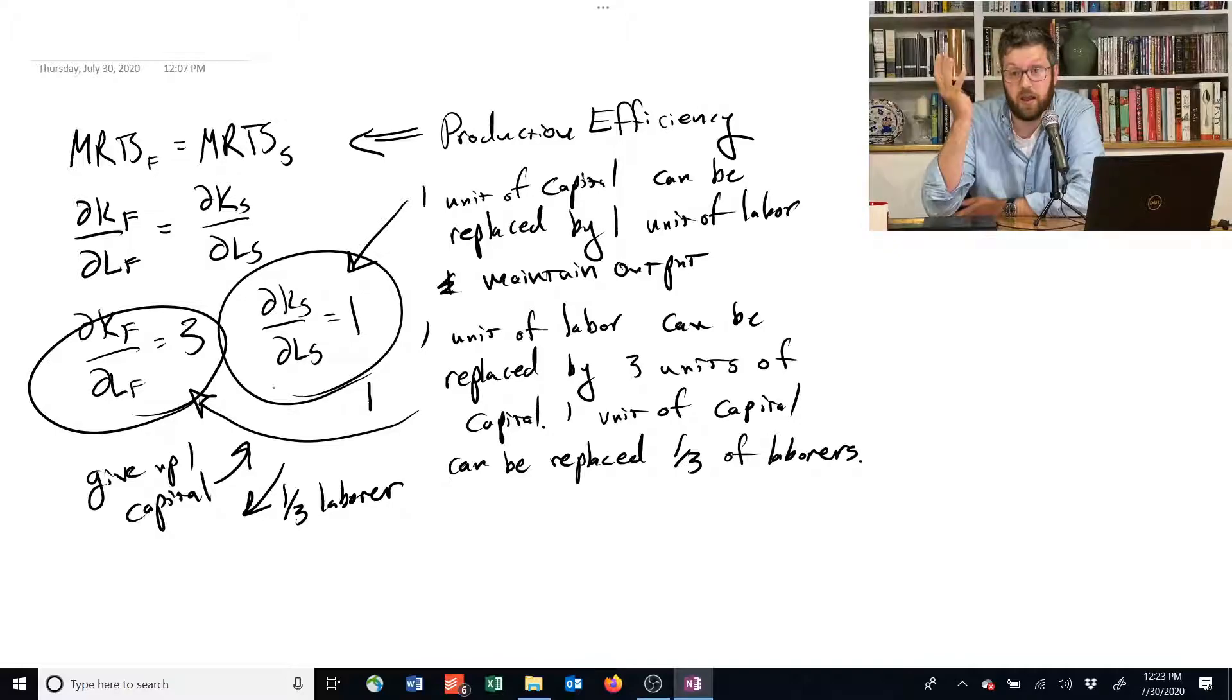So that means they are able to basically jump off of their isoquant and produce at a higher level. Because we have maintained production of food and increased production of shelter, we're in a situation where there was no trade-off - we got more of one without sacrificing any of the other, and we were not at a productive efficient point.